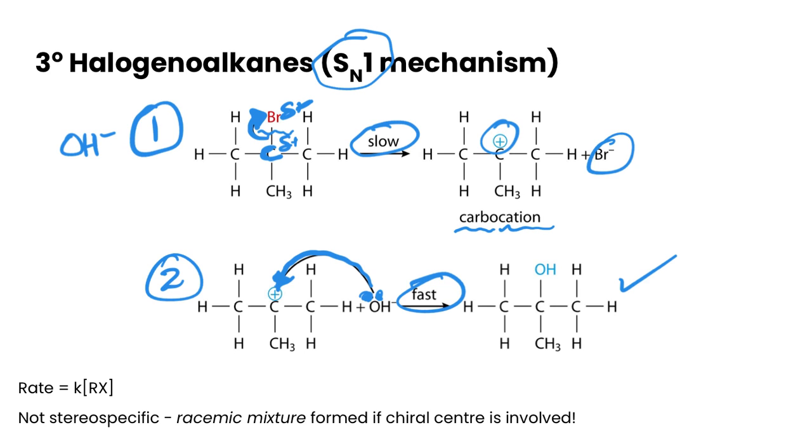Now this is a unimolecular, or in terms of molecularity, reaction. Our rate determining step is our slowest step. So our rate determining step only depends on the halogeno alkane. So if we were to write a rate equation, it would only be affected by the halogeno alkane. The nucleophile concentration itself doesn't matter in this case.